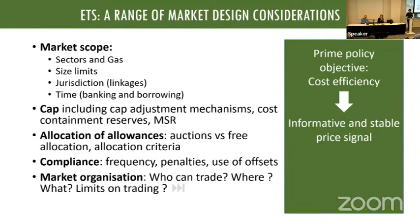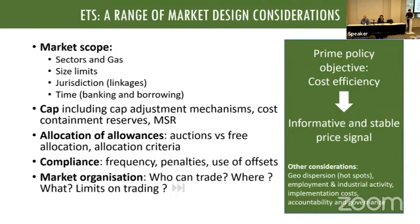The primary objective is cost efficiency. What this requires is to make sure that the price generated by this market is informative of the distribution of abatement opportunities and sufficiently stable. Why sufficiently stable? Because a lot of abatement technologies are bulky — they are long-term investments of 20 to 25 years. In electricity markets it's easy to reduce emissions by shifting from coal to gas very quickly, but if you're in steel or cement you have to think about entirely different technologies — those are really long-term investments. Of course there are also other concerns: geographical dispersion, employment impacts, implementation costs.